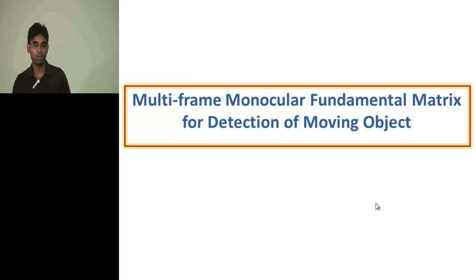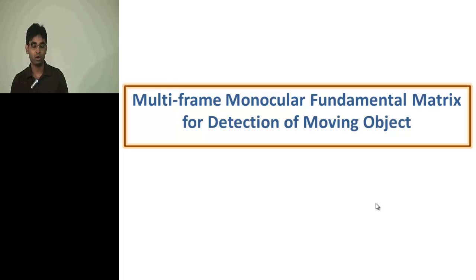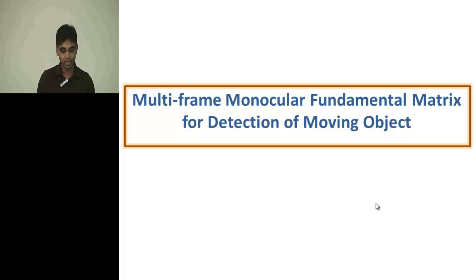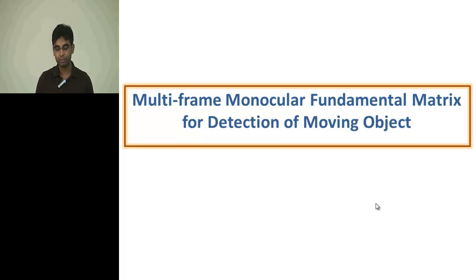However, the fundamental matrix based approach has some problems, as shown in the paper. The detection is not robust across different noise levels and different camera motions. Also, we have to calculate the fundamental matrix for each frame in which we need to detect moving objects. So we moved to a further idea: the multi-frame monocular fundamental matrix (MMFM) based approach.